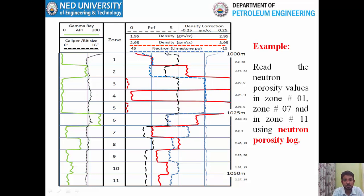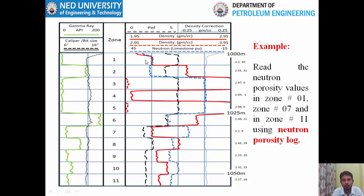The scale of the neutron log from the log header is from 45% to minus 15%, and the neutron value decreases from left to right. The neutron log is reported in limestone units. The scale range is 60%, divided into 4 boxes, so each box equals 15%. At the first box line the neutron value is 30%, at the second box line it is 15%, and at the third box line it is 0%.